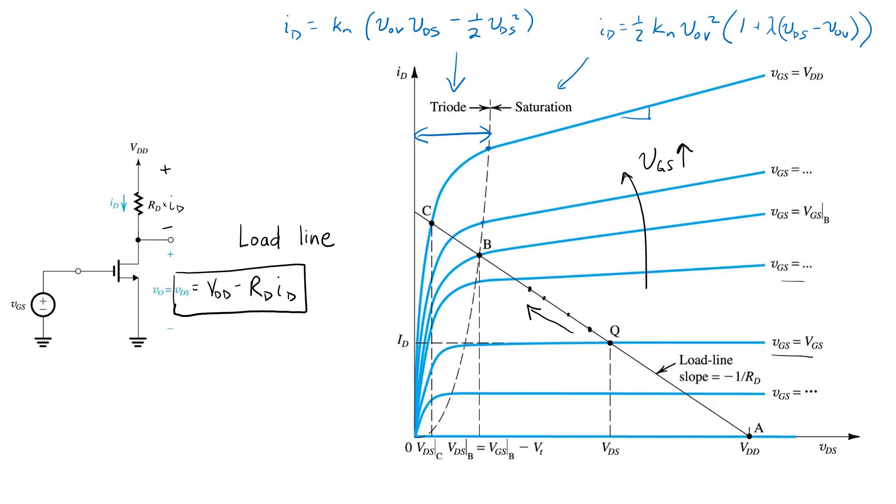So, recall that to have a high gain, we want to make sure that the operating mode of the transistor stays in saturation. So, to do so, we want to make sure that the intersection point, as we slide back and forth along these blue curves,